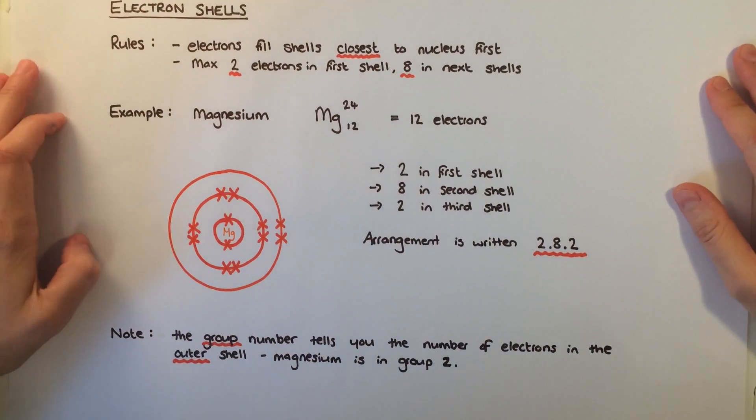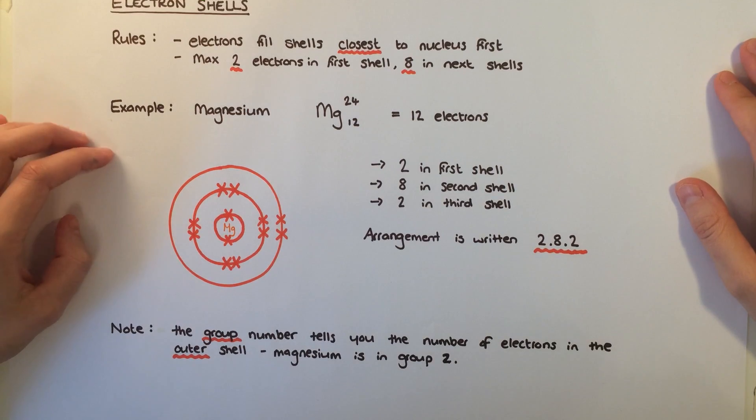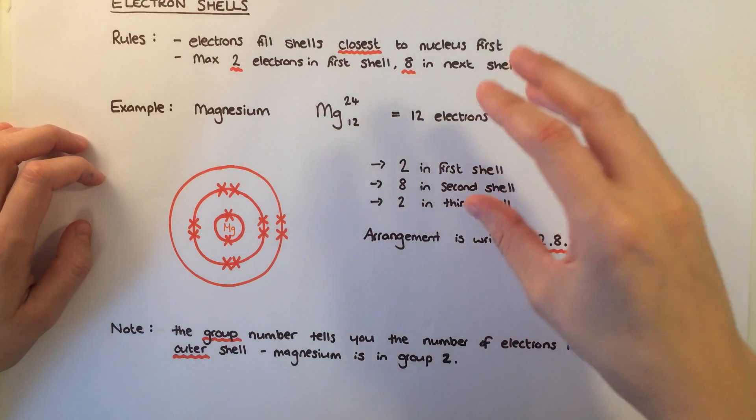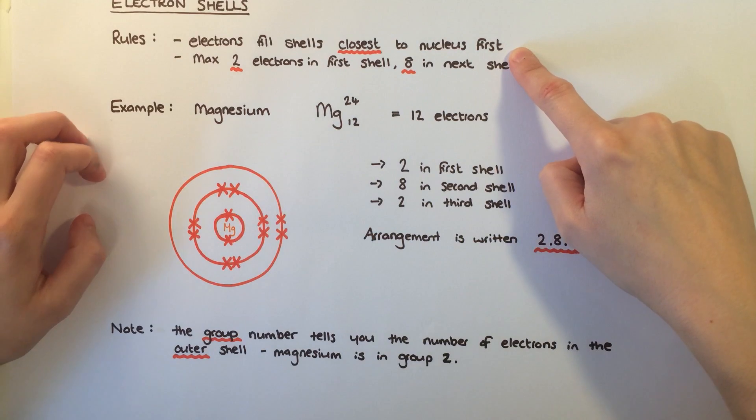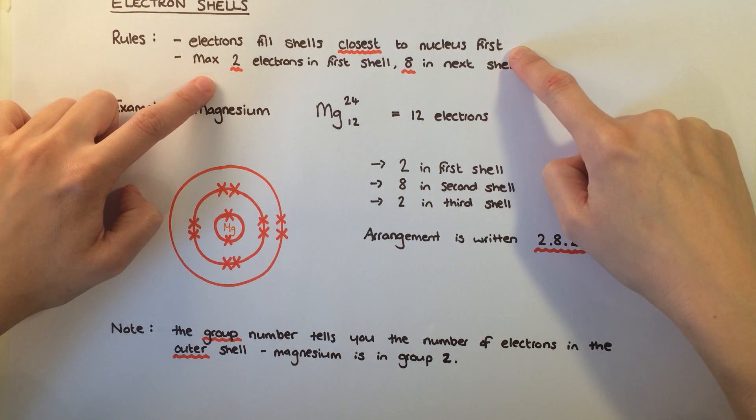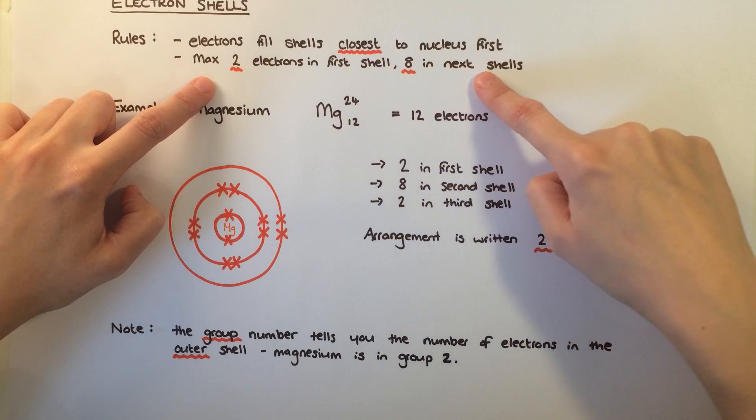You need to be able to describe the arrangement of electrons in the shells for the first 20 elements in the periodic table. The basic rules are that electrons fill the shells closest to the nucleus first. The first shell can have a maximum of 2 electrons, and the next shells can each have up to 8 electrons.